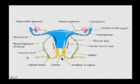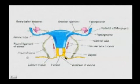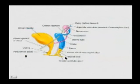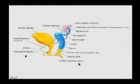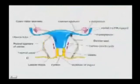Correction: the greater vestibular gland is Bartholin's gland, and that is the homologue of the bulbourethral or Cowper's gland in the male.